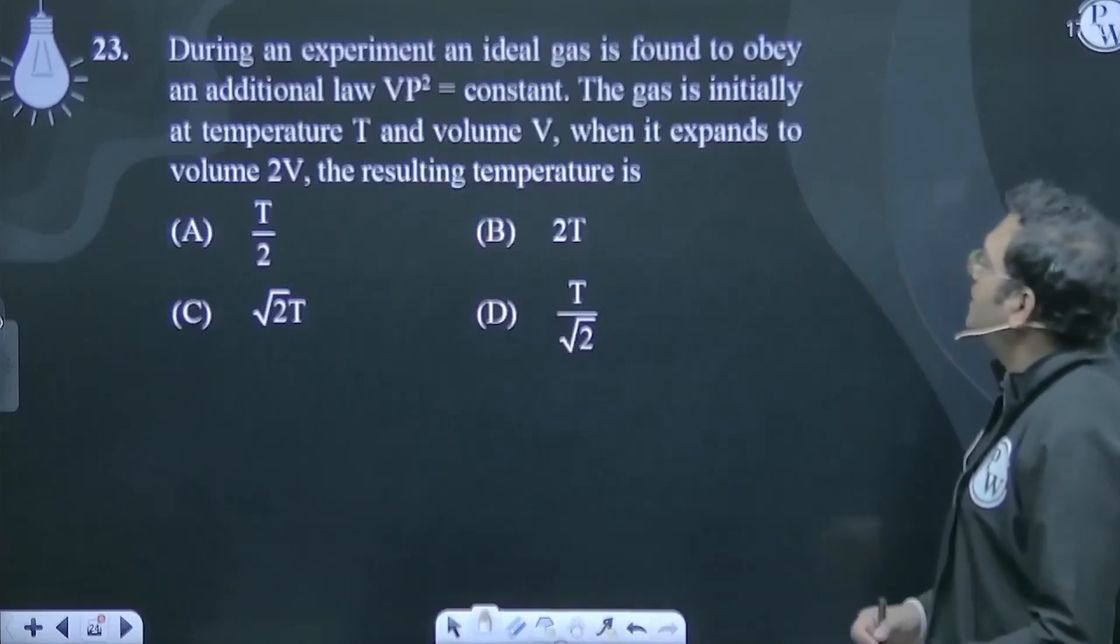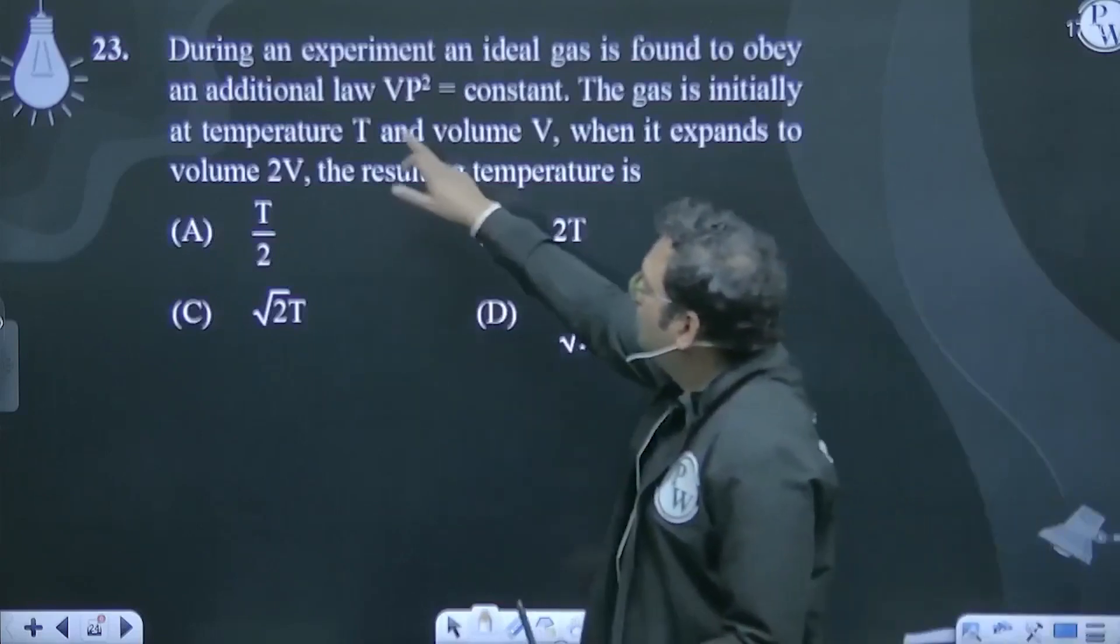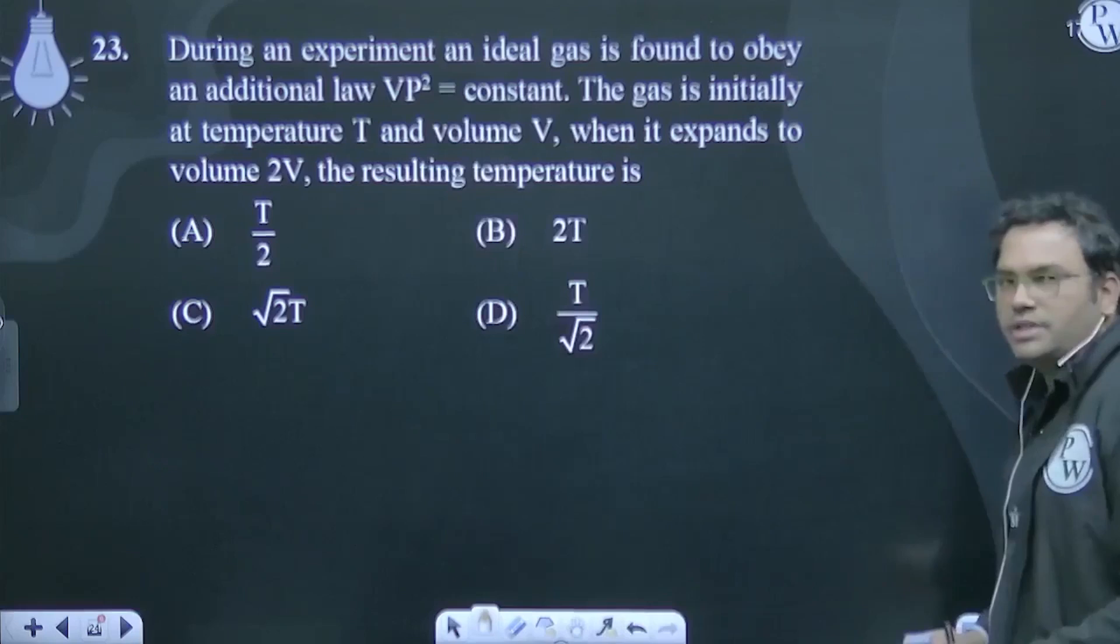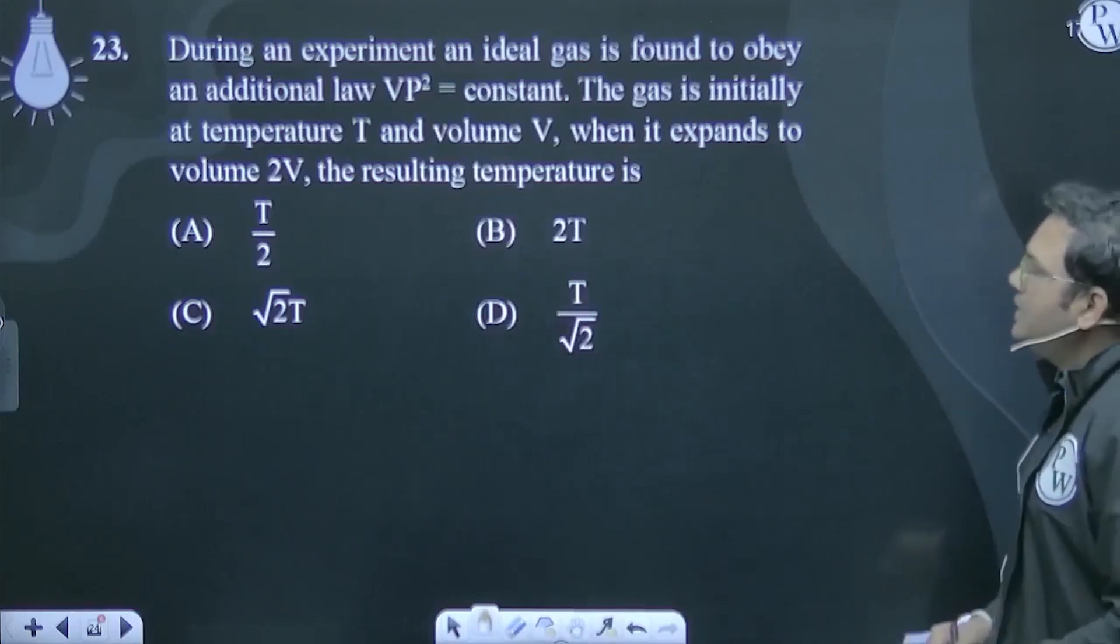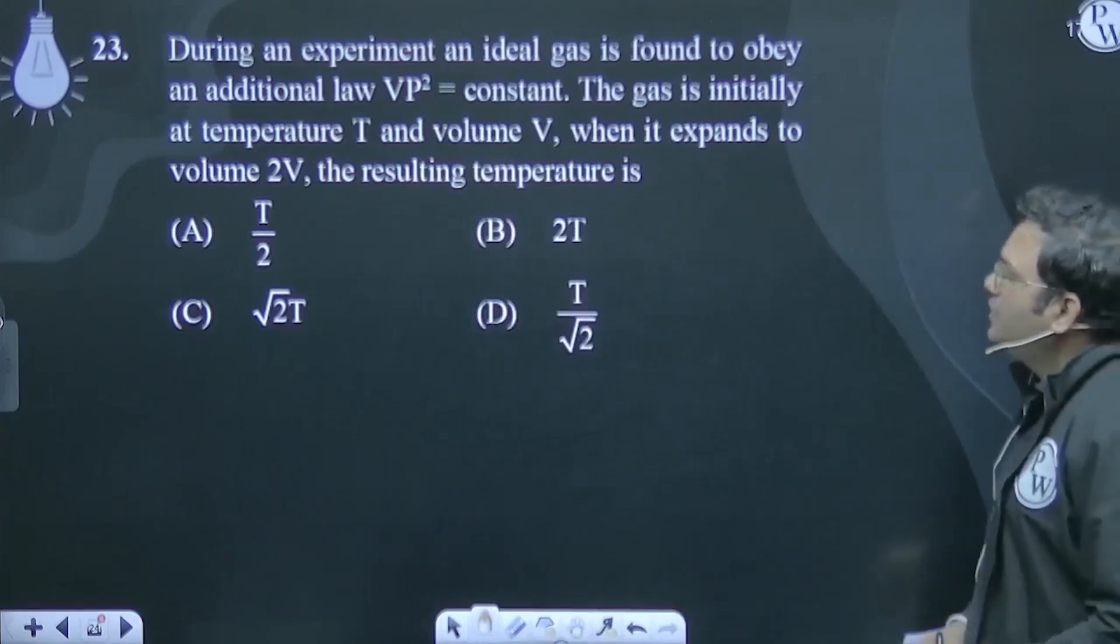During an experiment, an ideal gas is found to obey the additional law VP² equals constant. The gas is initially at temperature T and volume V. When it expands to volume 2V, the resulting temperature will be.